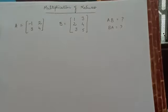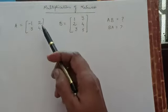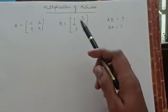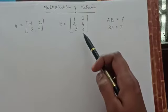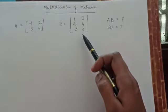Let us discuss the multiplication of matrices. The first condition for multiplying two matrices is that the number of columns in the first matrix should be equal to the number of rows in the second matrix.